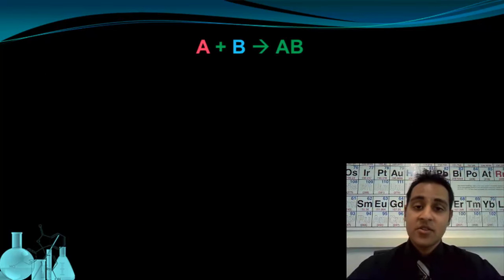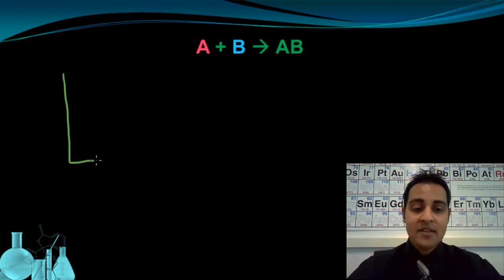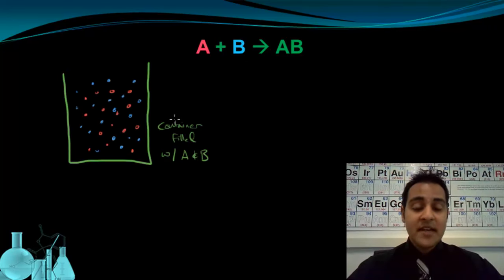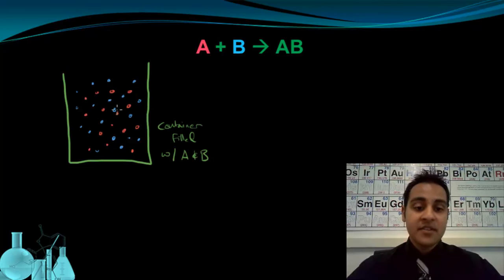Let's take a look at the reaction of A and B to form AB. Here I have a container, and I'm going to fill this container with my reactant particles. My container is now filled with reactants A and B. As those reactants are constantly moving around and colliding with each other, every now and then you're going to have a successful collision, and AB is formed. I could have a number of these successful collisions.